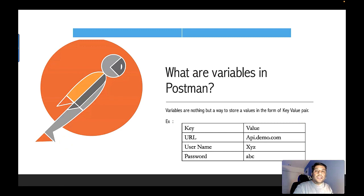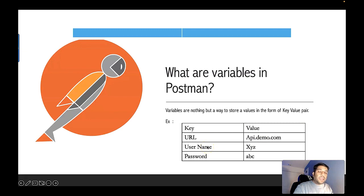Before we dive into the Postman tool, let's first understand what a variable is in Postman. Variables are nothing but a way to store a value in the form of a key-value pair. For example, 'url' is the key and 'apidemo.com' is the value. Similarly, 'username' is a key and 'xyz' is its value. Same way, 'password' is a key and 'abc' is its value.